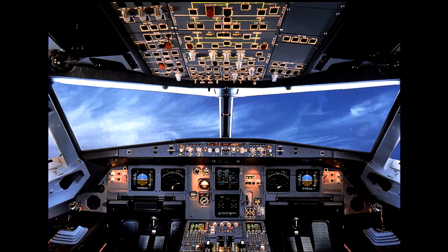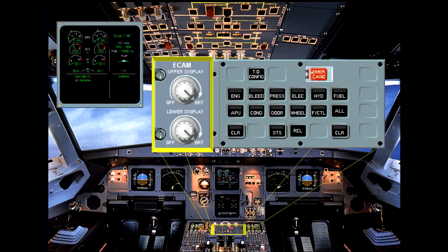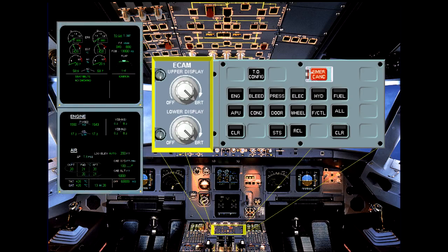Below the ECAM displays on the center pedestal is the ECAM control panel. The two controls on the left-hand side are to adjust the brightness of the two ECAM screens, or to turn them off. We will look at the rest of the controls on this panel in more detail later.